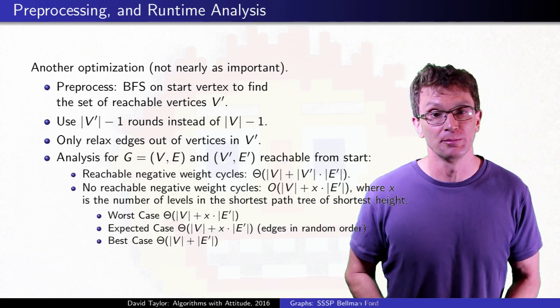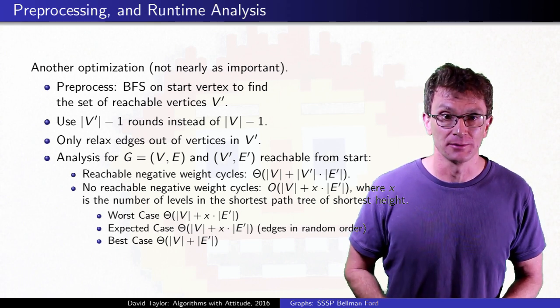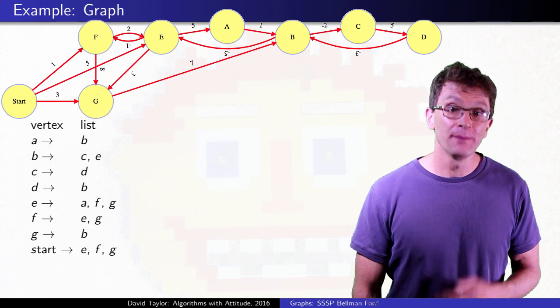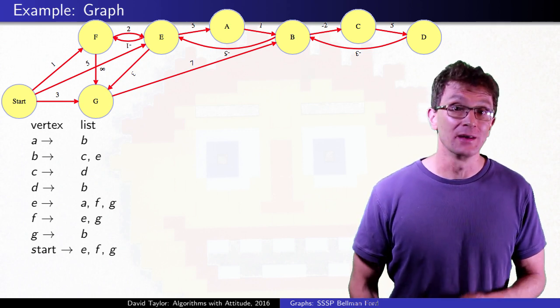The analysis is similar to before, with time added for preprocessing. Ok, one example on a simple graph with no negative weight cycles.